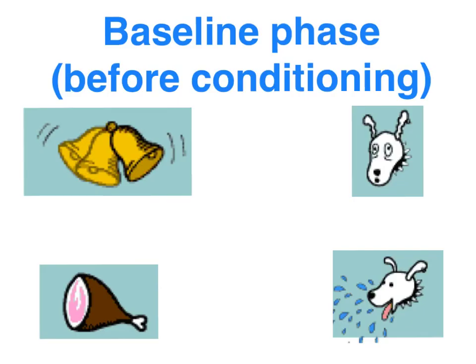I've already produced a clip where I've defined the five elements of classical conditioning. In this clip, I just want to focus on the three phases of Pavlov's experiment. During the baseline phase — i.e., prior to conditioning — Pavlov tested out a variety of stimuli: for instance, the sound of a metronome, the sound of a tuning fork, the flashing of a light, but most famously, the sound of a bell. During the baseline stage, when Pavlov rang the bell, it evoked no response. So during this stage, the bell was a neutral stimulus, which evoked no response.